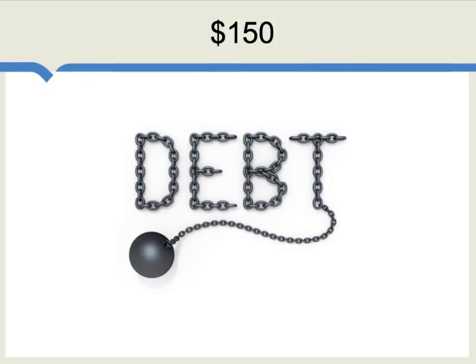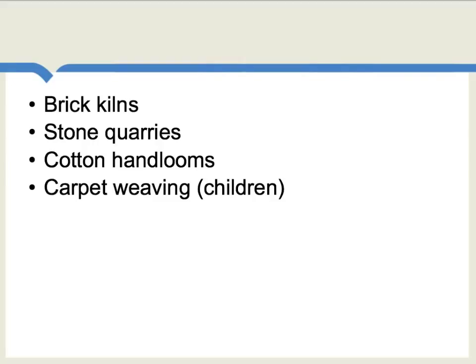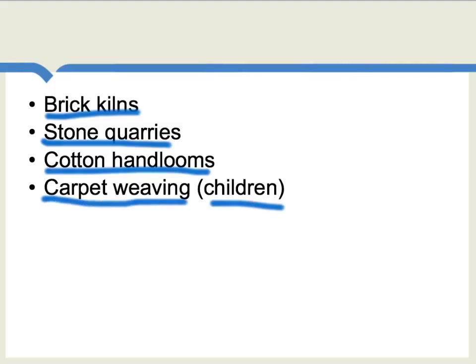When it comes to debt bondage in South Asia, quite commonly the amounts of money at stake are really quite small, typically in the neighborhood of about 150 US dollars. Bonded laborers work in many sectors, but some especially common jobs involve working with brick kilns, in stone quarries, with cotton hand looms, and also, in the case of children, carpet weaving. For many women and some boys, bonded labor as prostitution is also a serious issue.